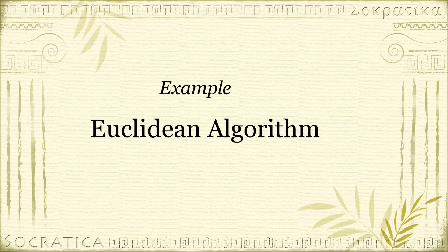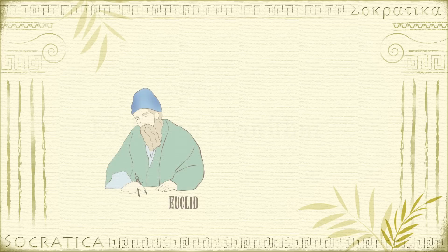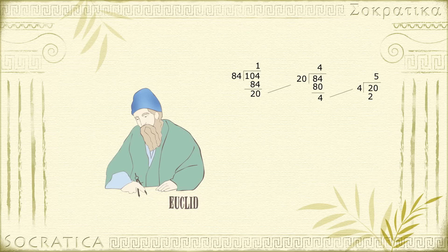The Euclidean algorithm is a method for finding the greatest common divisor of two integers. It's a very old method — it's been around for about 2,300 years and first appeared in Euclid's Elements. What makes this method so powerful is you don't have to factor the numbers to find the greatest common divisor. You're going to repeatedly perform long division, and when the method stops, the remainder will be the greatest common divisor.